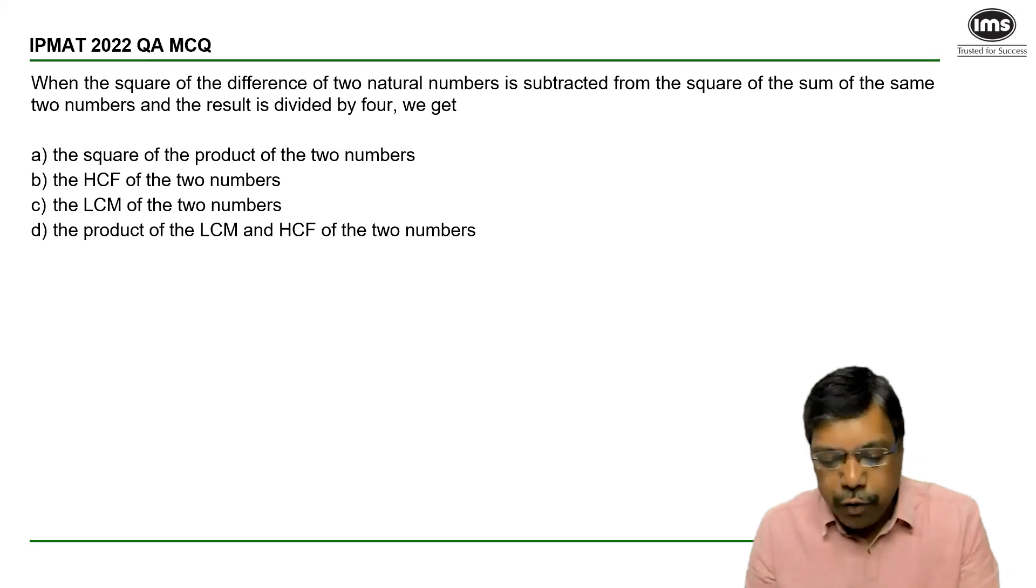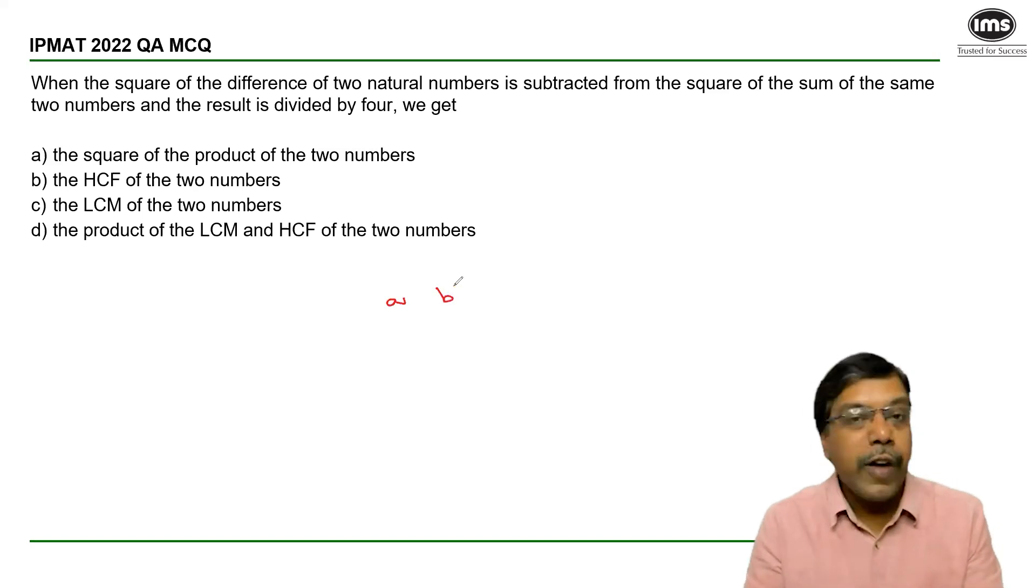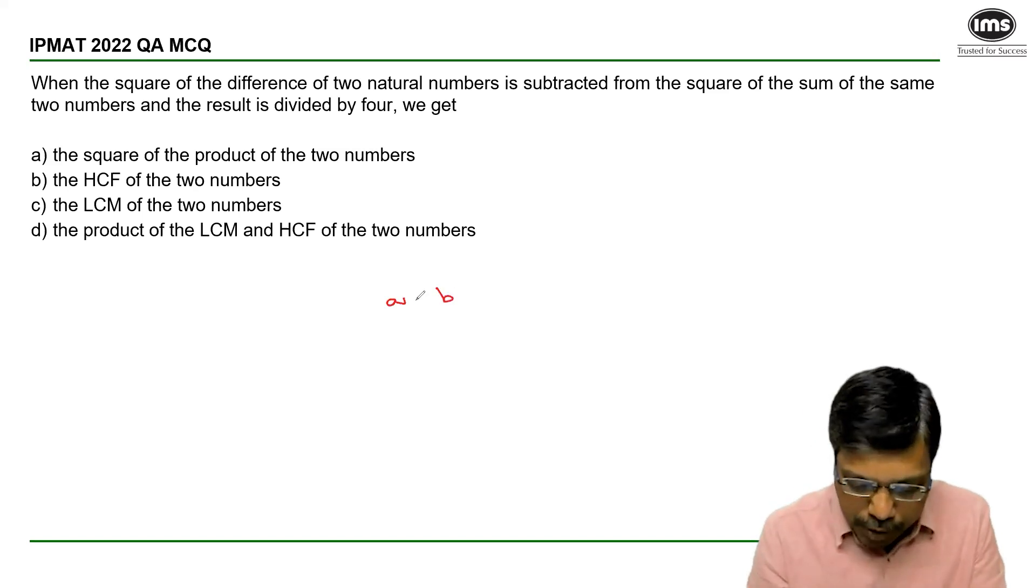When the square of the difference of two natural numbers - let me consider the two numbers to be a and b. Square of the difference, so difference (a minus b), and the square.